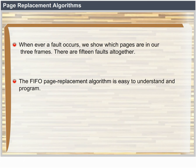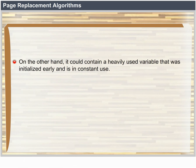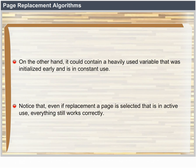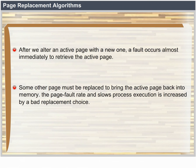The FIFO page replacement algorithm is easy to understand and program. However, its performance is not always good. The page replaced may be an initialization module that was used long ago and is no longer needed, or it could contain a heavily used variable in constant use. Notice that even if we select for replacement a page that is in active use, everything still works correctly — after replacing an active page, a fault occurs almost immediately to retrieve it. A bad replacement choice increases the page fault rate and slows process execution, but does not cause incorrect execution.